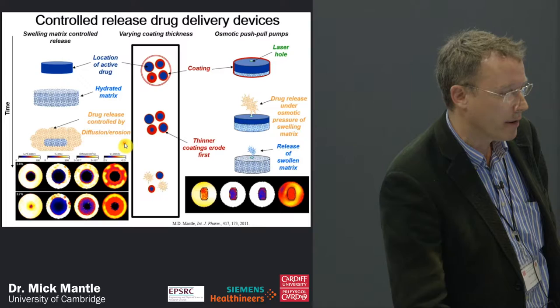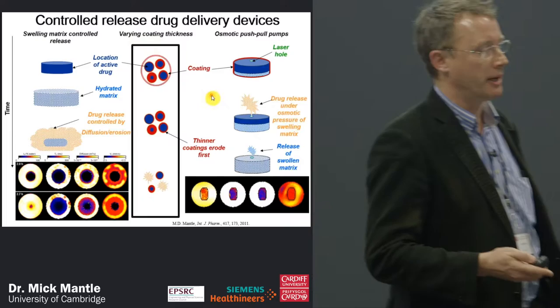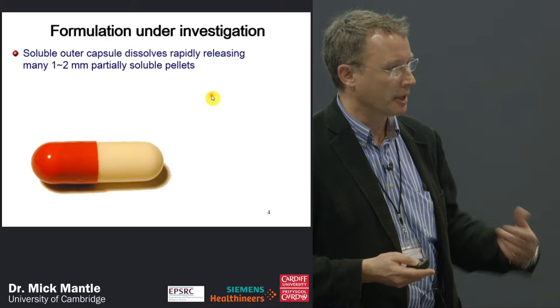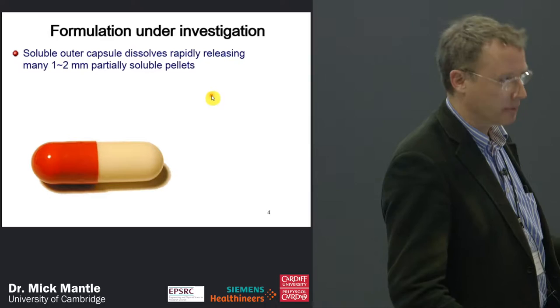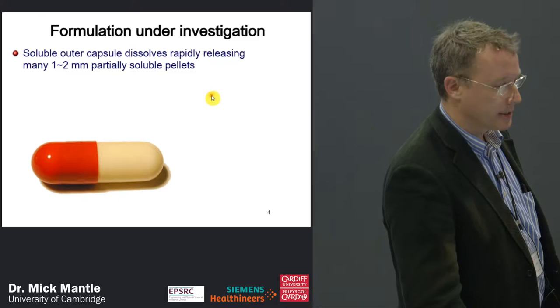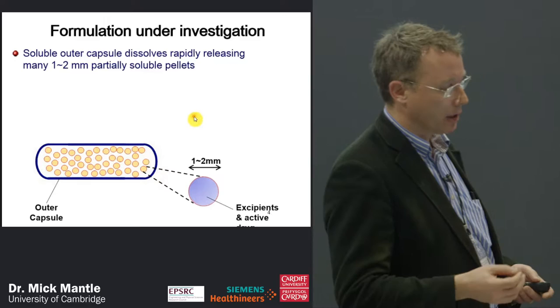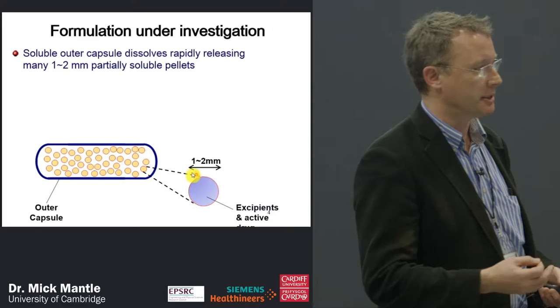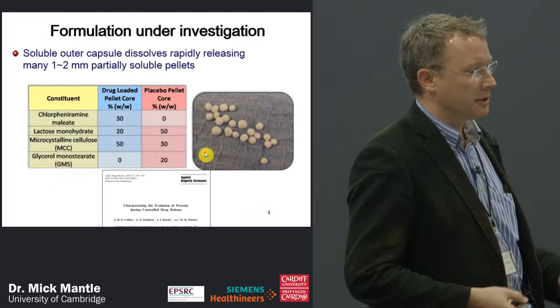Today I'm going to talk about varying coating thickness drugs — we're going to ignore the coating and focus on the actual pellets inside and how porosity evolves once we challenge them with a dissolution medium. These are capsules like you might get for Contact 400 for cold and flu. If you strip those down, there's a gel outer capsule that dissolves quickly, then lots of tiny beads — generally around one to two millimetres — inside that contain the excipients and the active drug ingredients.